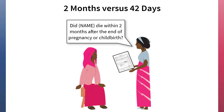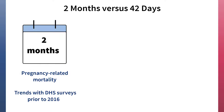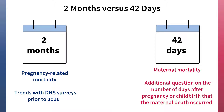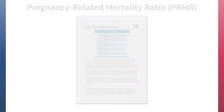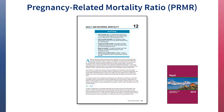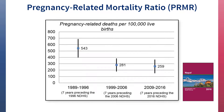In the past, DHS questions used a two-month interval because this time period is easier for interviewers to communicate to respondents than 42 days. DHS continues to use two months for calculating pregnancy-related mortality ratios to allow for trend interpretation, but now restricts maternal mortality ratio calculations to the 42 days after the end of a pregnancy. The DHS final report chapter on adult and maternal mortality now includes a figure to show trends in pregnancy-related mortality, if available.